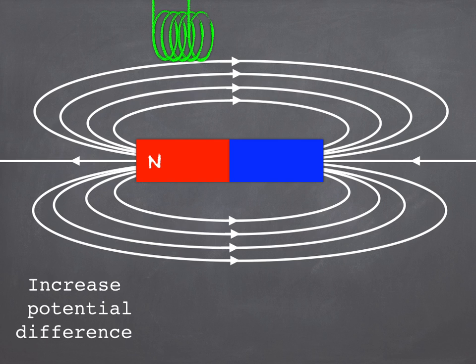If you have more wire, and the easiest way to do that is to coil it up into a loop or a solenoid we call it, then it also increases the potential difference. There's more conductor inside the magnetic field.